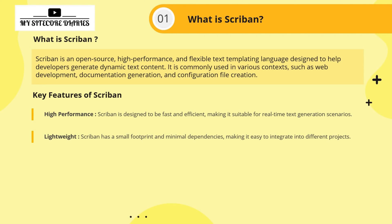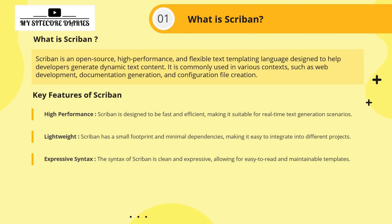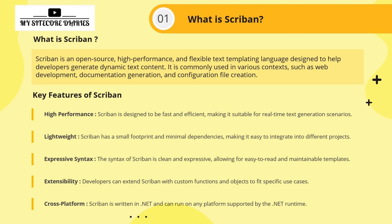The key features of Scriban are: first, high performance — Scriban is designed to be fast and efficient, making it suitable for real-time text generation. Second, lightweight — Scriban has a small footprint and minimal dependencies, making it easy to integrate into different projects. Third, expressive syntax — the syntax is very clean and readable. Fourth, extensibility — developers can extend Scriban with custom functions and objects to fit specific use cases. Fifth, cross-platform — written in .NET, it can run on any platform supported by the .NET runtime.